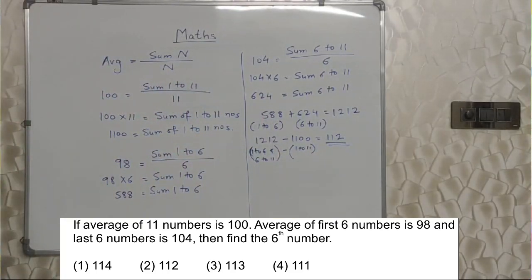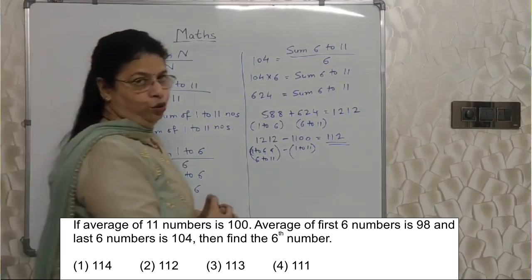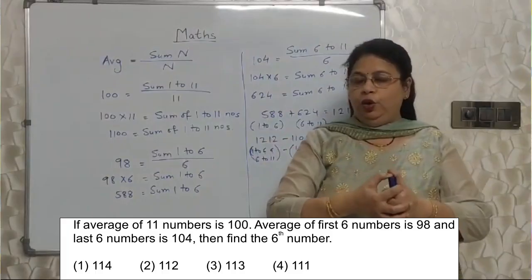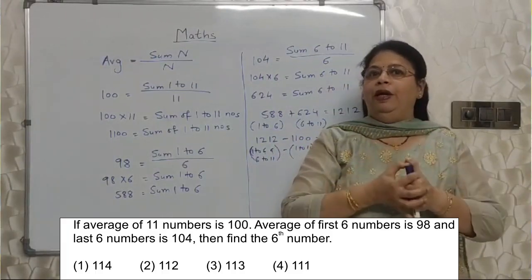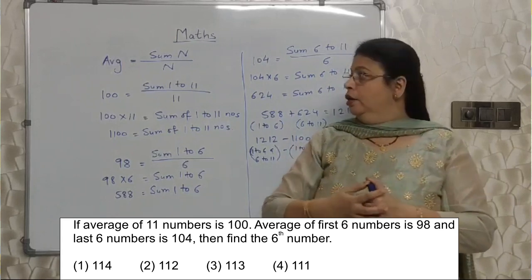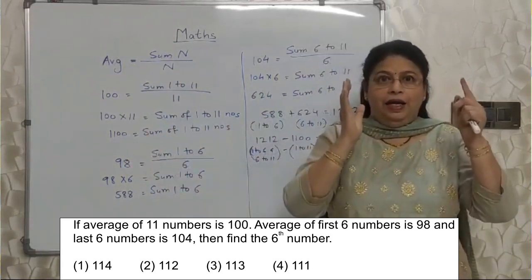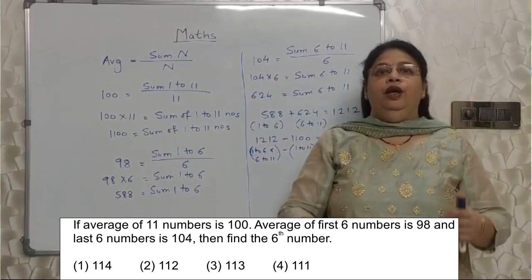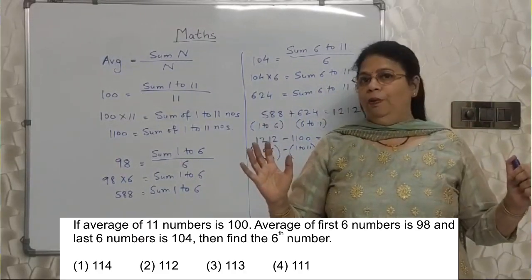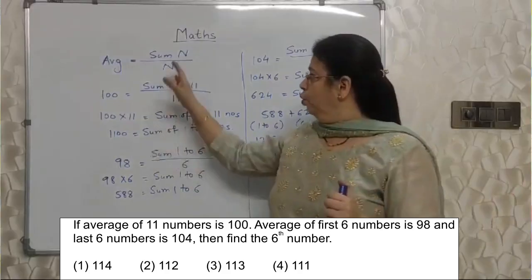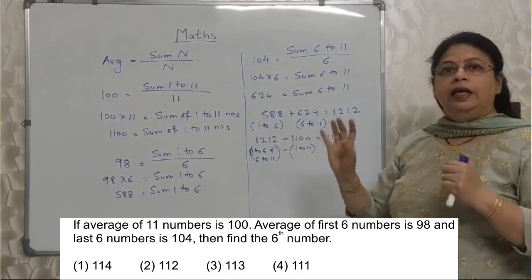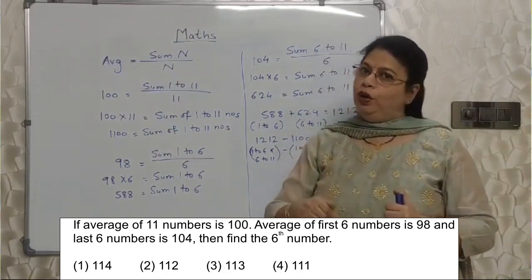112 is the 6th number. I hope you all have understood this. Average seems to be easy, but when you actually do it, the probability of making a mistake may be more because understanding plays a vital role here. If you understand what you are doing, you will not make any mistake. Please go through this again, and in case you have any difficulty, let me know in the comment section.